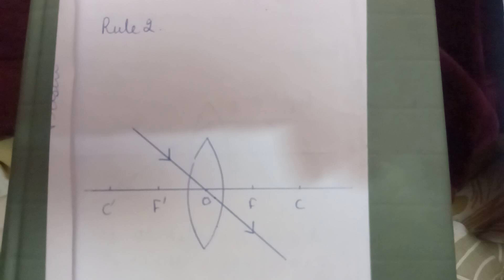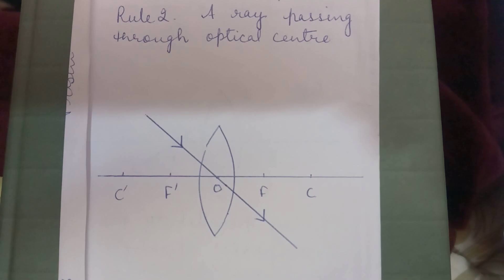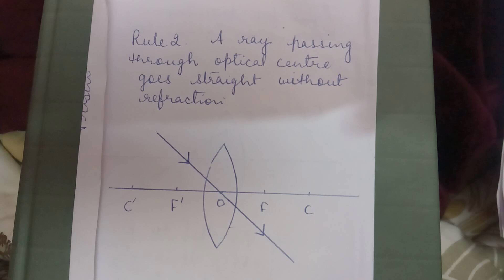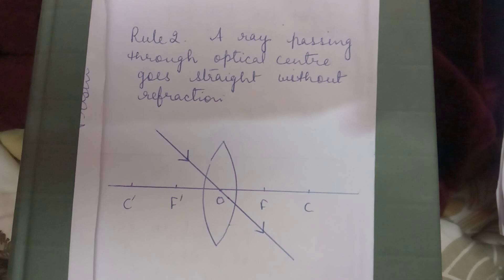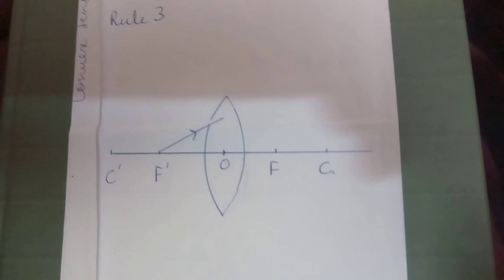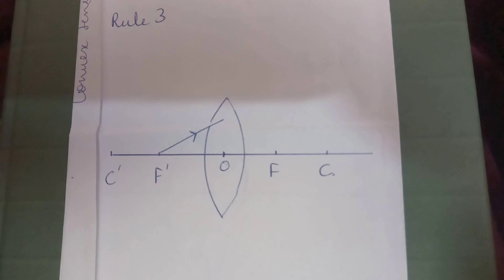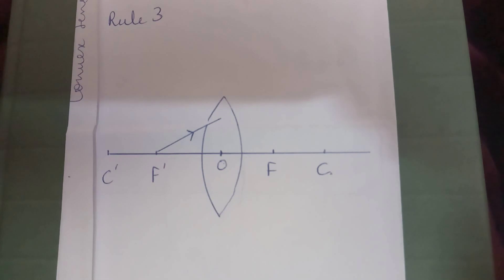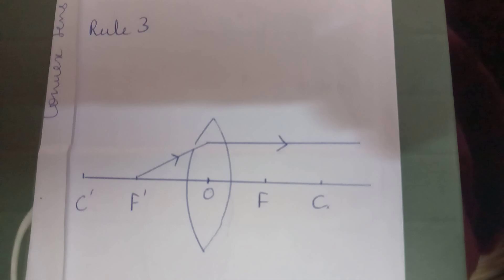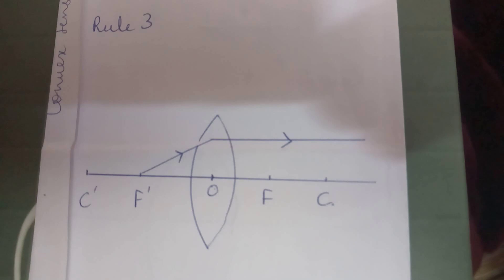Rule three: a ray coming from the focus becomes parallel to the principal axis after passing through the lens.